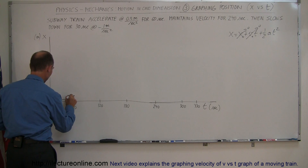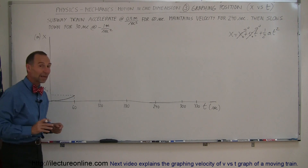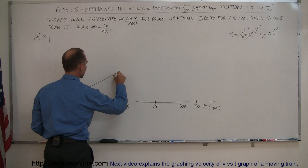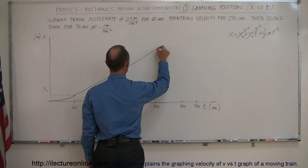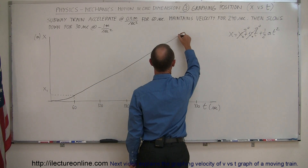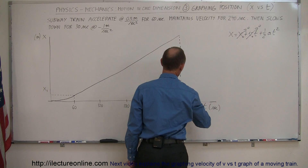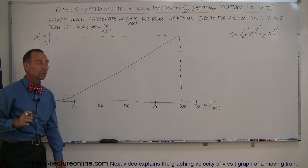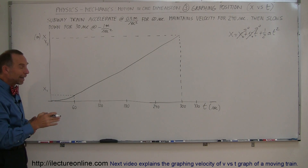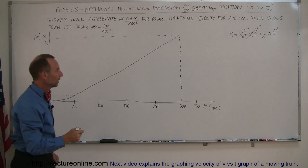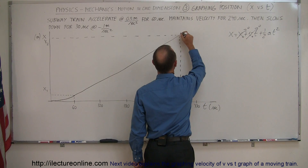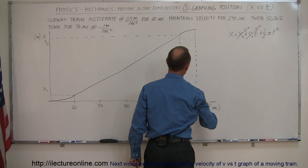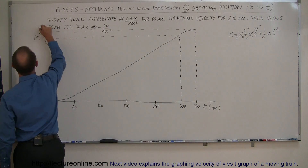There's our first position x1 after 60 seconds. After the first 60 seconds, the train maintains the speed it obtained, which means it continues in a straight line for another 240 seconds. There's the straight line. The train now reaches position x2. For the next 30 seconds it slows back down to zero — negative acceleration — so the velocity is decreasing. It curves like a parabola opening downward, and after 330 seconds total, the train has reached its maximum displacement x3.